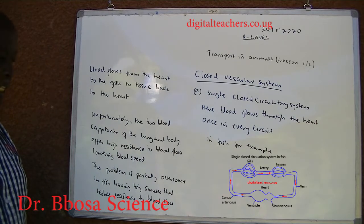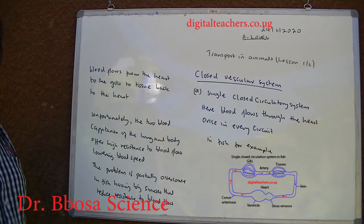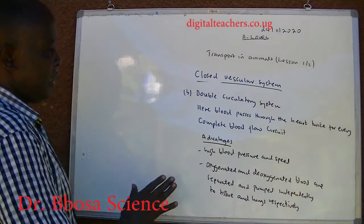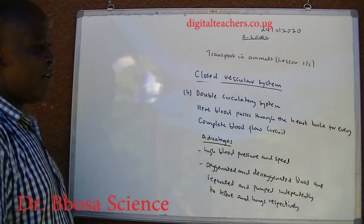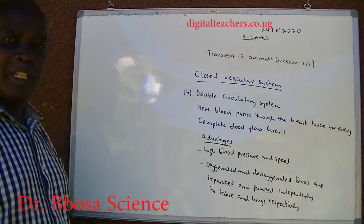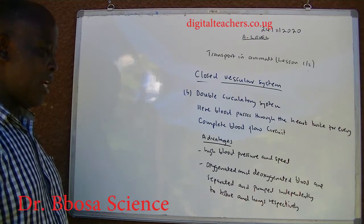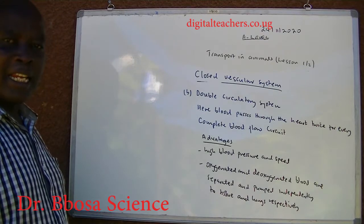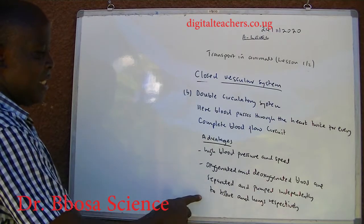The problem is partially overcome in fish having large sinuses that reduce resistance to blood flow. Double circulatory system: here blood flows through the heart twice for every complete blood circuit. Advantages: high blood pressure and speed; oxygenated and deoxygenated blood are separated and pumped independently to the tissue and the lungs respectively.